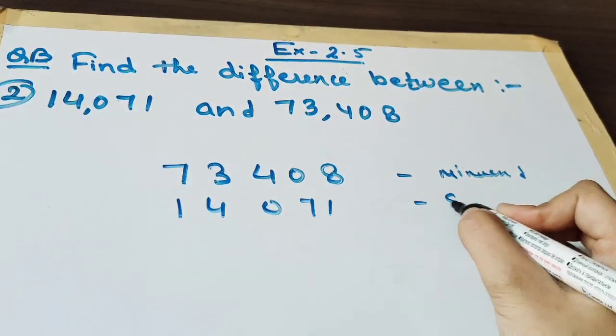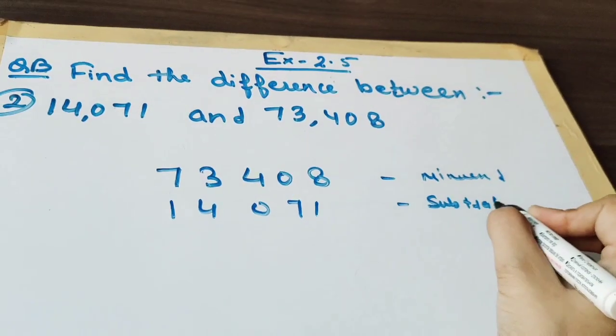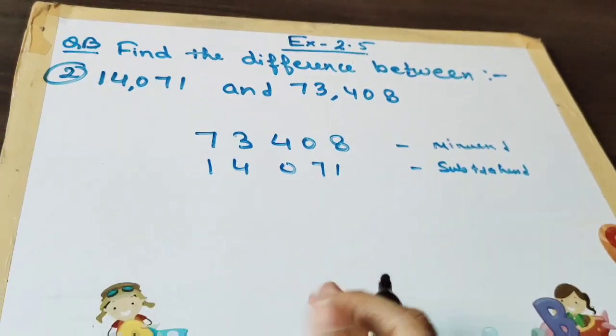Now this is smaller. So we will write here. And this is what? Subtrahend. And you know this. We have already discussed this.